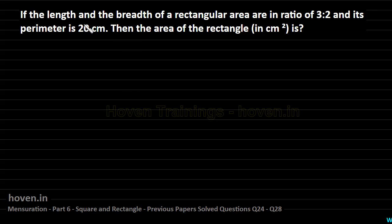If the length and breadth of a rectangular area are in the ratio 3 is to 2 and its perimeter is 20 cm, then the area of the rectangle in square centimeter is what?